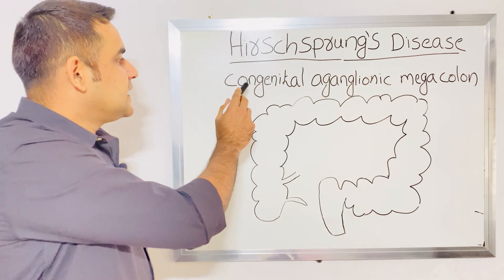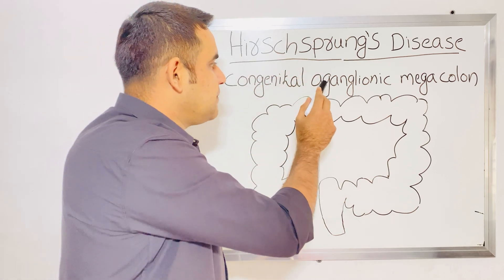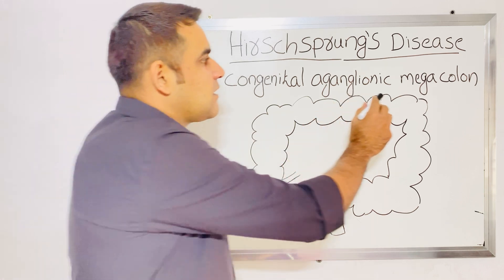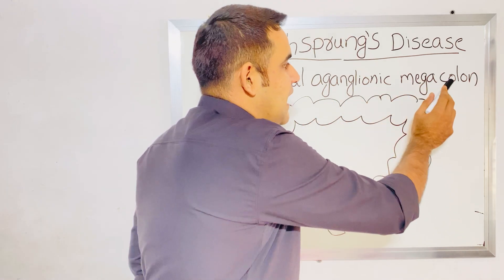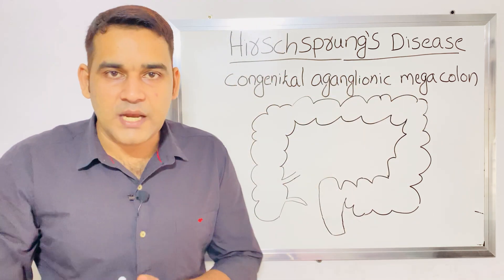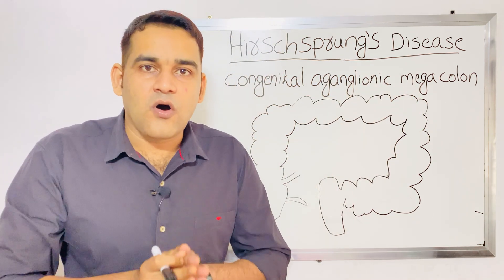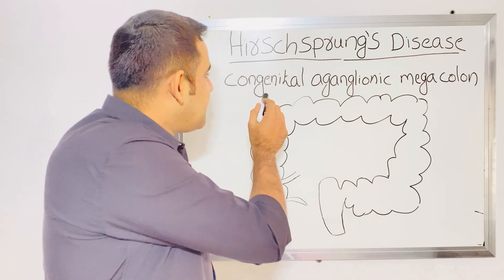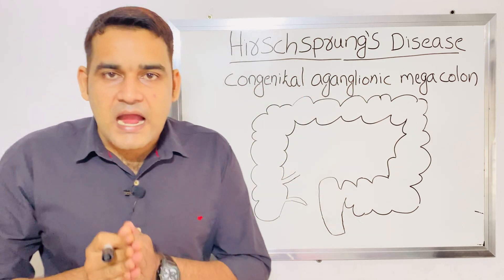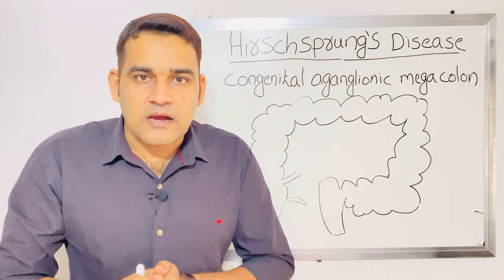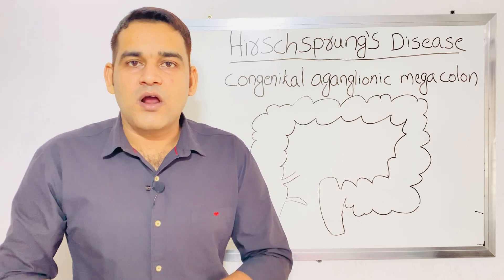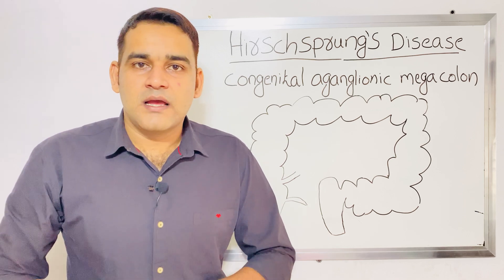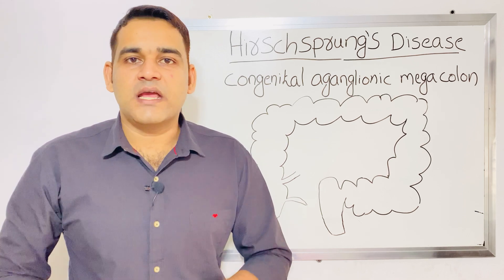Hirschsprung disease is also known as congenital aganglionic megacolon. In the name itself: congenital means by birth, aganglionic means absence of ganglion cells, and megacolon means big colon or big intestine. So by birth, due to absence of ganglionic cells, the colon becomes megacolon.